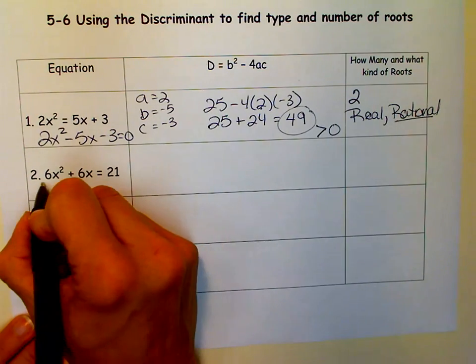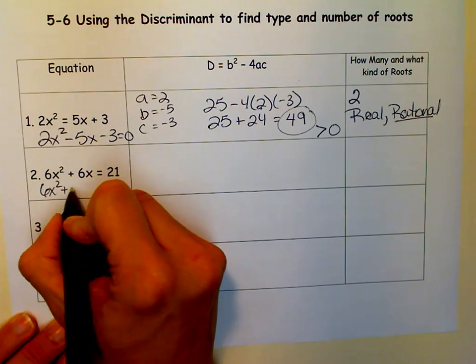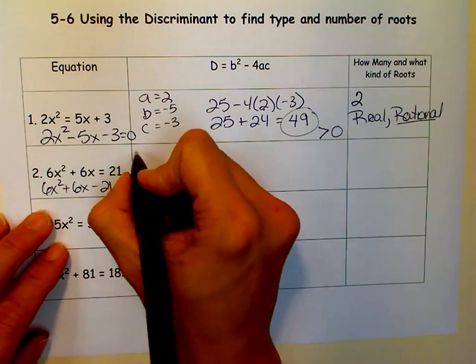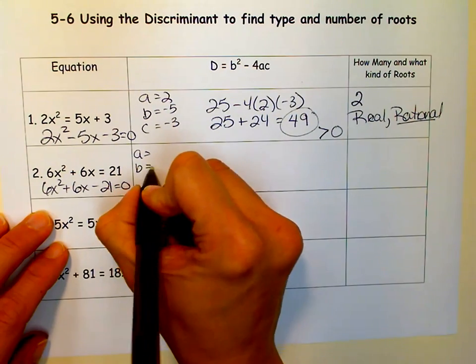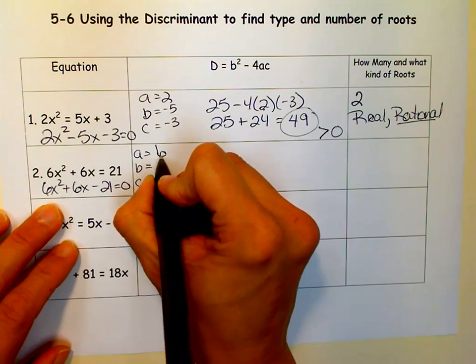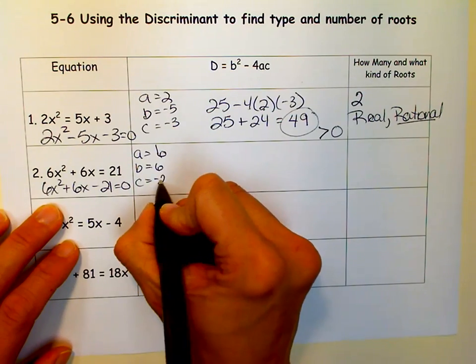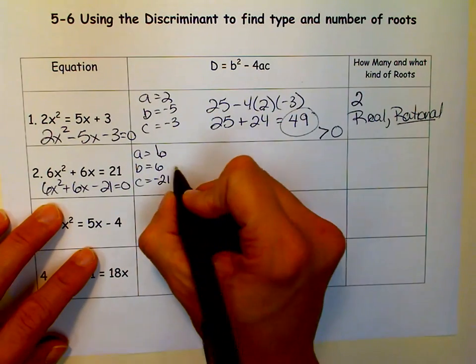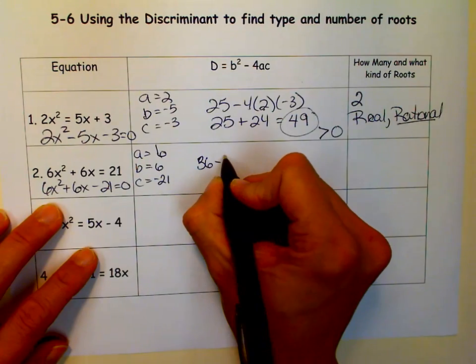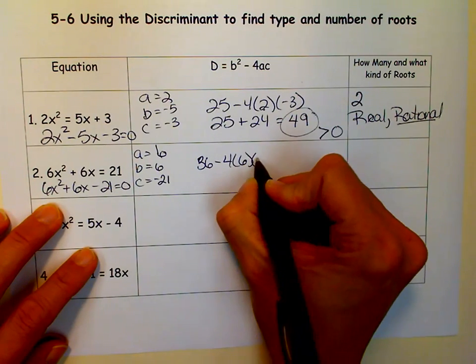So this one, I'm going to have to move that 21 to the left. And then I'm ready for my a, b, and c. So my a is 6, my b is 6, and my c is negative 21. So b squared, minus 4, times a, times c.